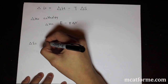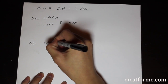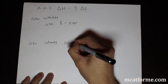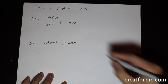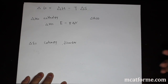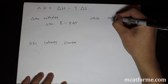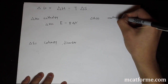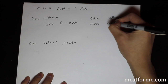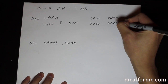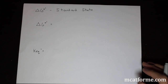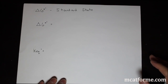Delta S is entropy — disorder. A bit more about enthalpy: if delta H is less than zero, the reaction is exothermic. If delta H is greater than zero, it's endothermic. That's pretty much what we need to know about the equation itself.